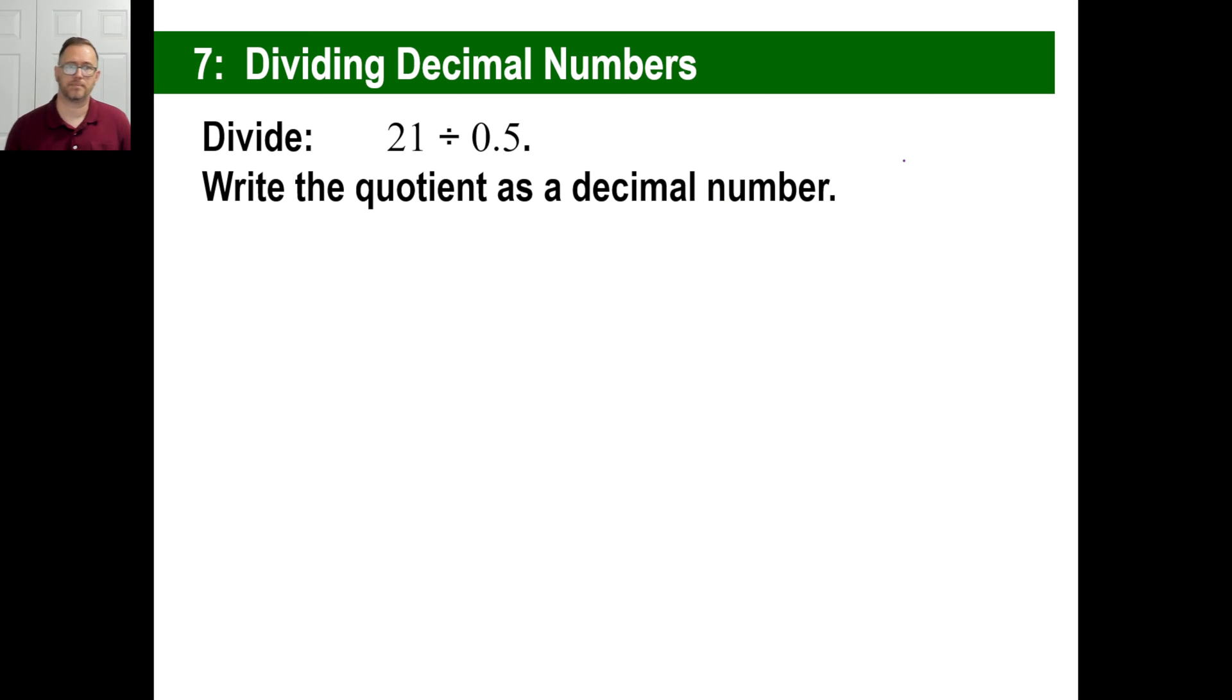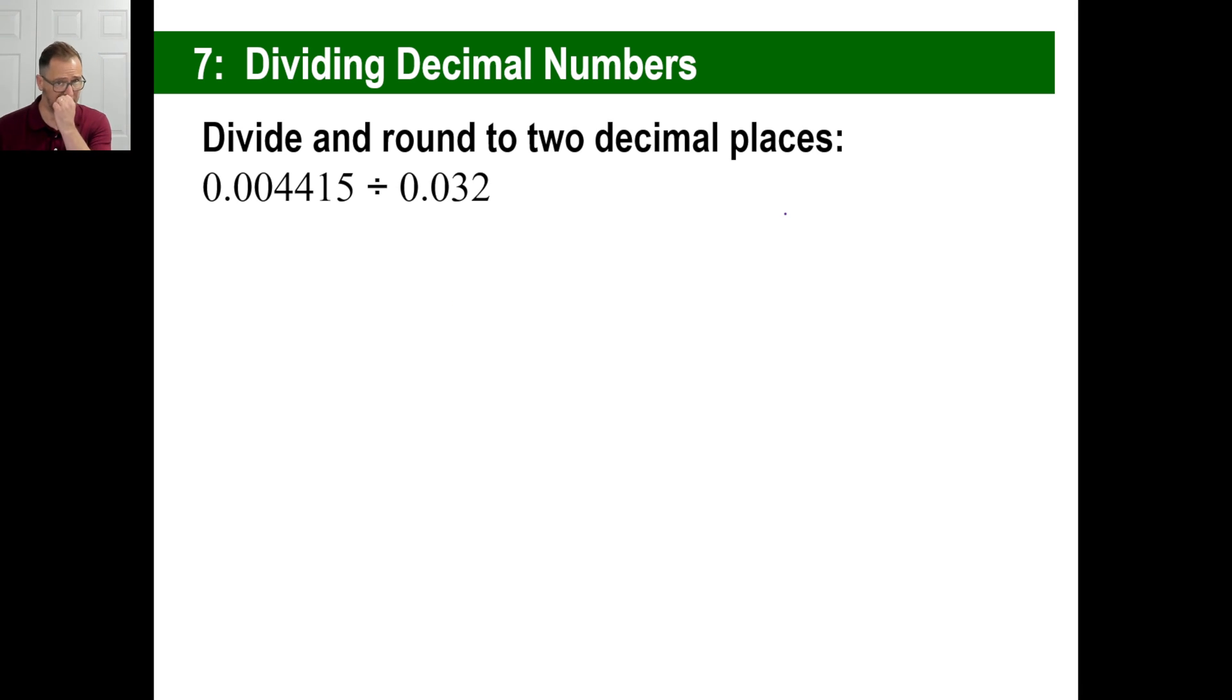All right. Let's divide this and write the quotient as a decimal number. 21 divided by 0.5. Well, I mean, you know, 21 divided by 0.5. There we go. And 25, you know, I mean, just move this thing over. Which means you move that thing over. Which I'd write it over if I were you. Or I'd do it in my head and then just do this part over here. And once you do this, you'll find the answer is 42. And there you go.